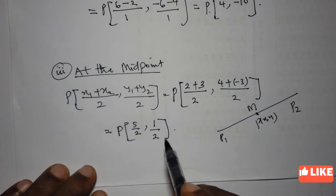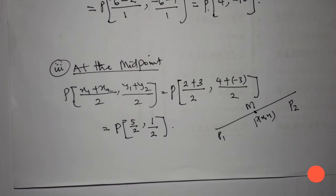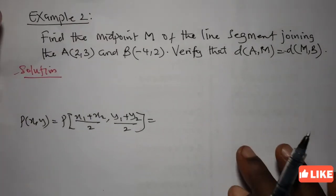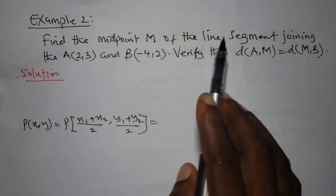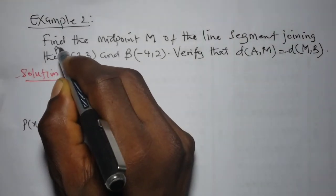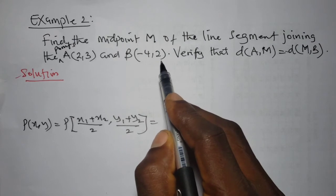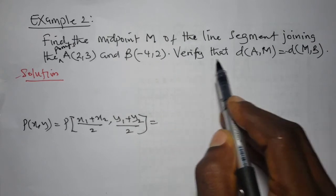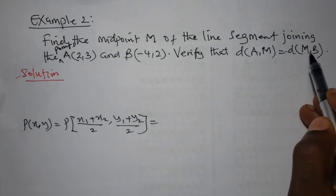I hope you understand this example — feel free to pause and go over it again. We shall take another example for today. The example says: find the midpoint of the line segment joining the points A(2, 3) and B(-4, 2). Then verify that the distance between point A and M equals the distance between point M and B.